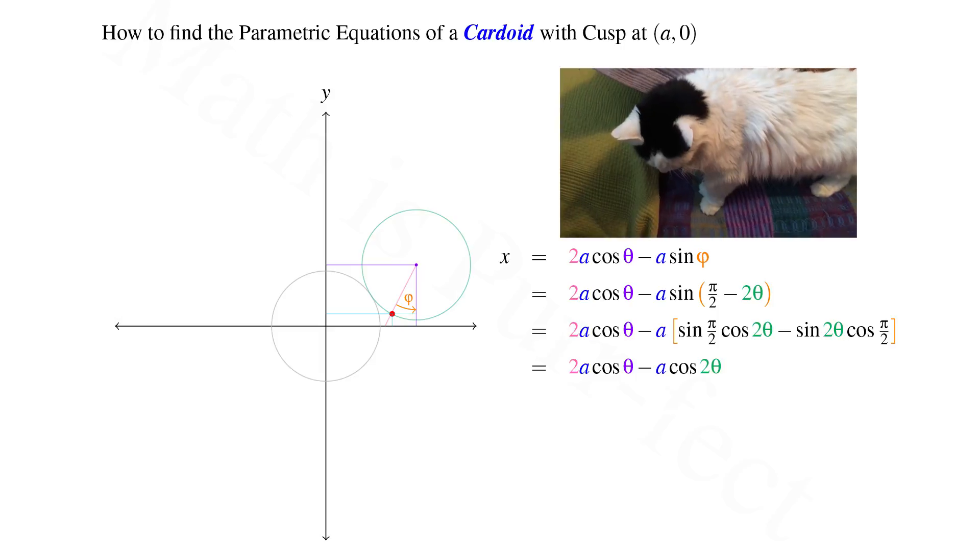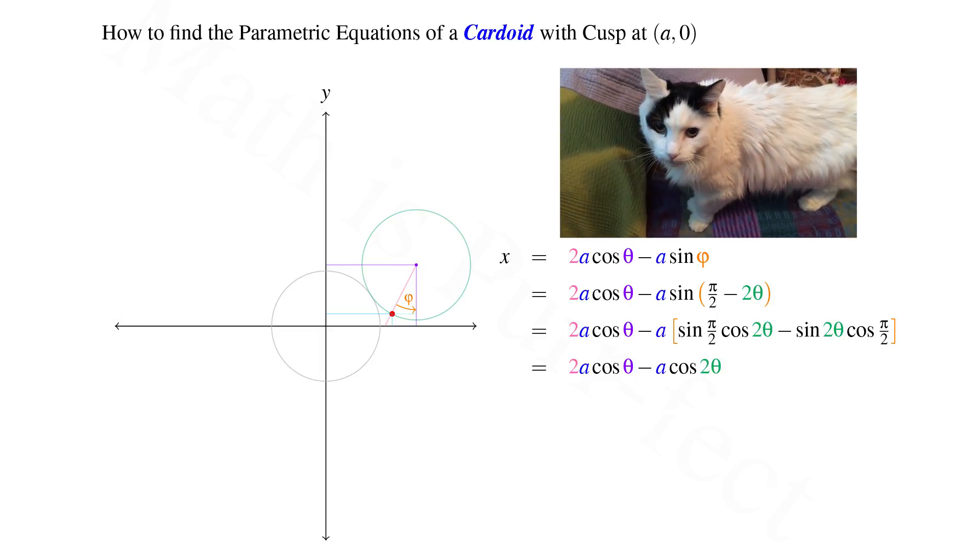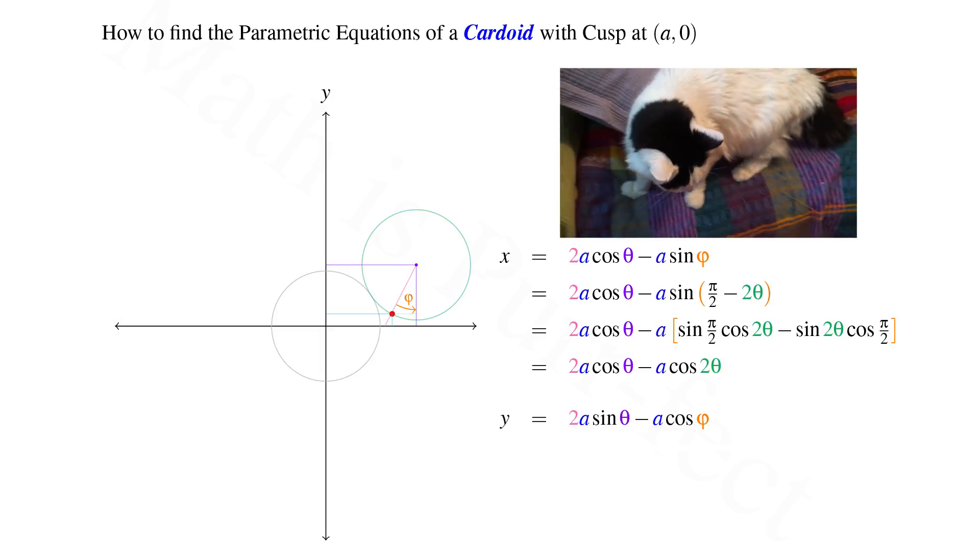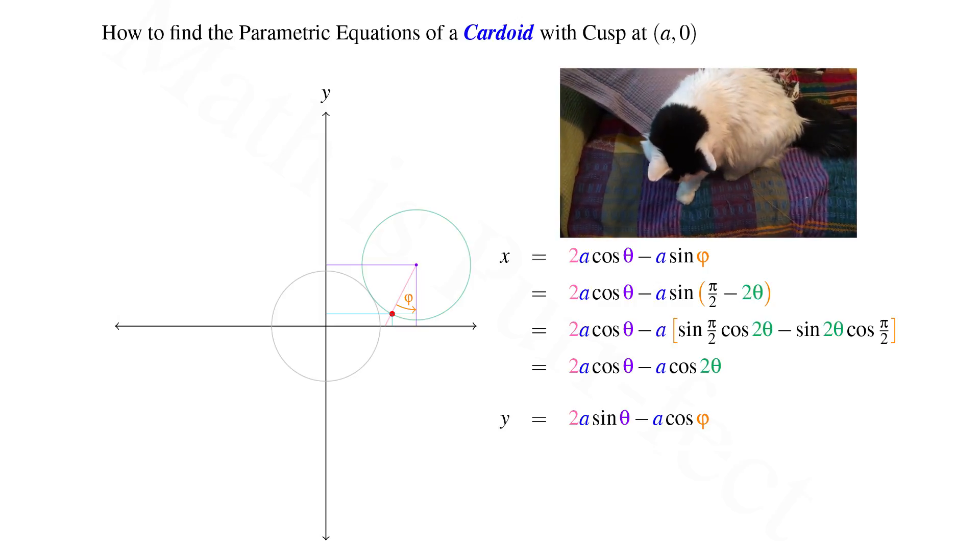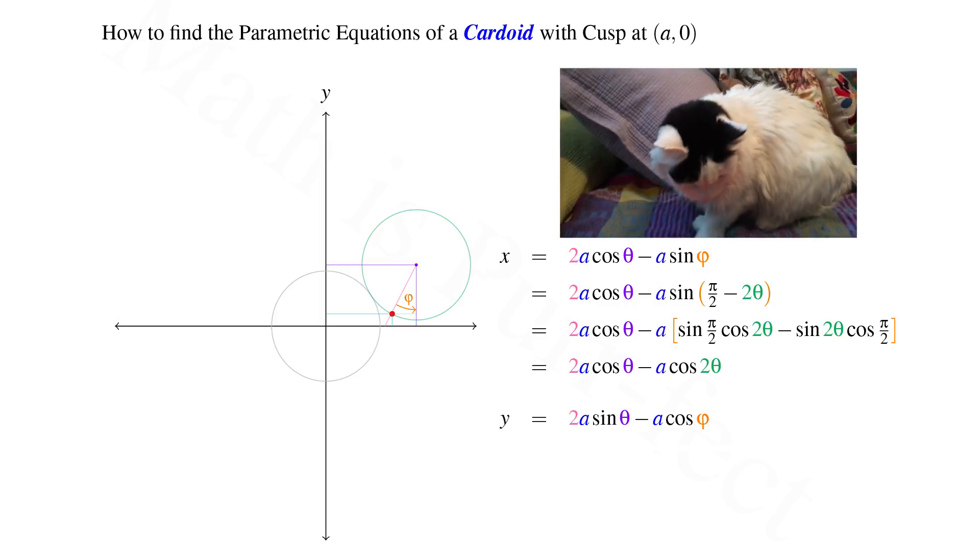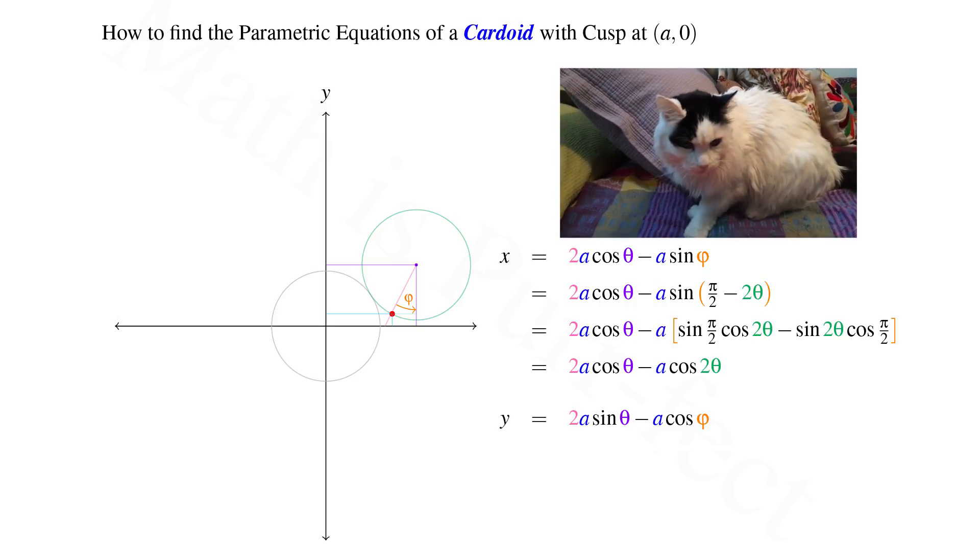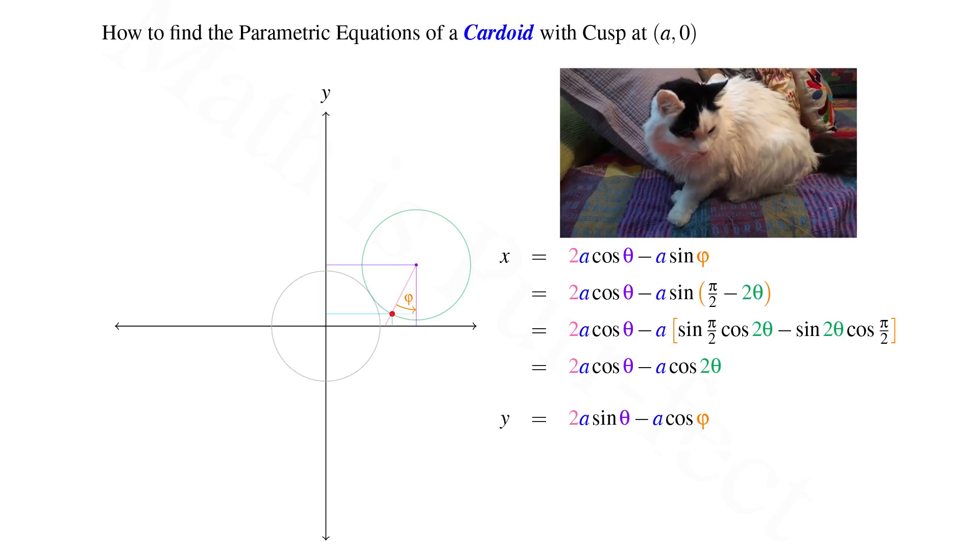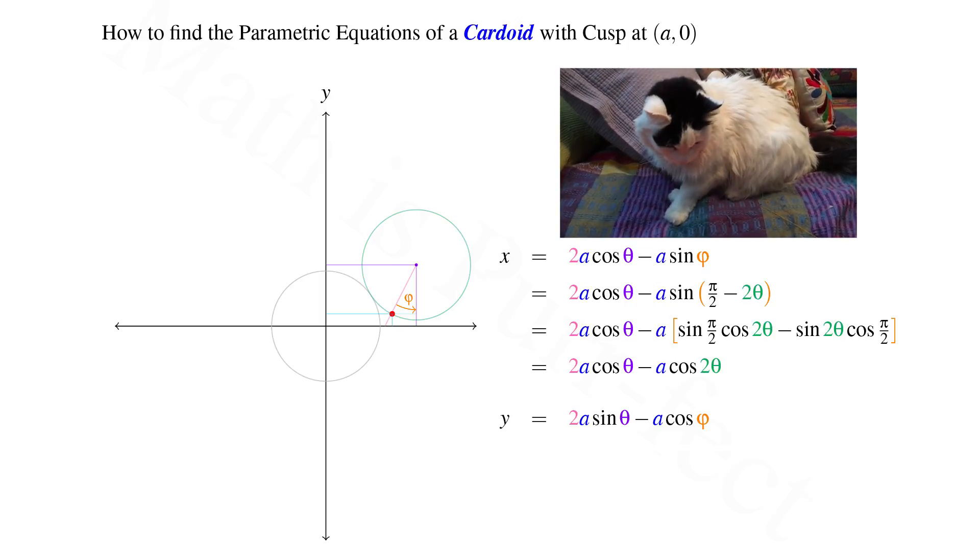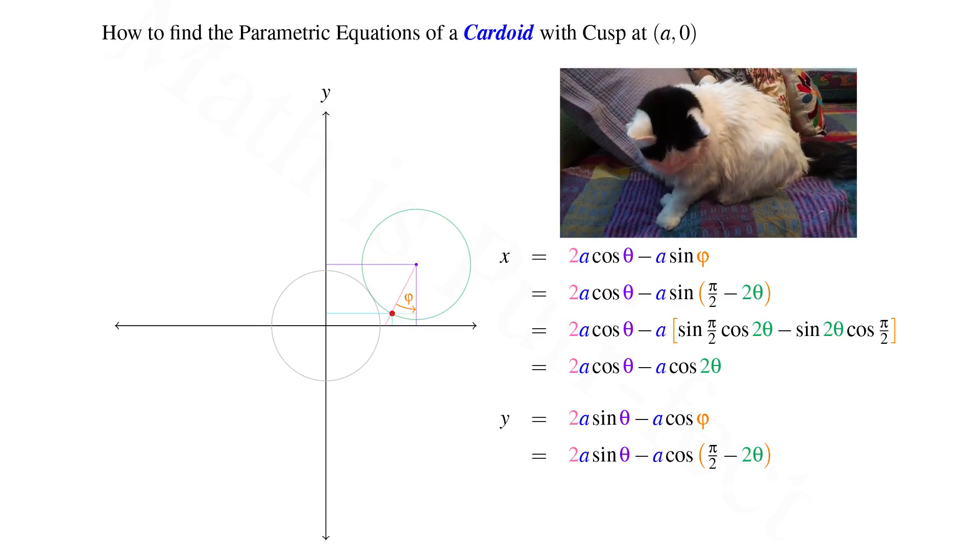Now let's do the same evaluation for the y coordinate. We similarly subtract the vertical distance from the center of the exterior circle to the point on the cardioid. Hence, the y coordinate will be at 2a sin theta minus a cos phi.